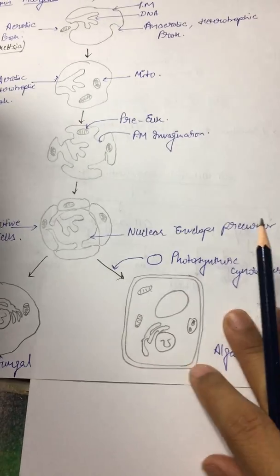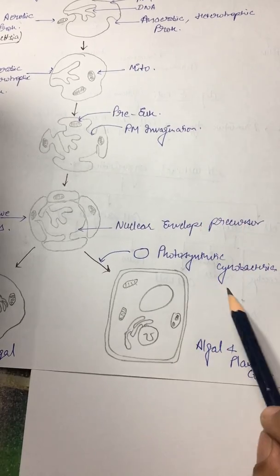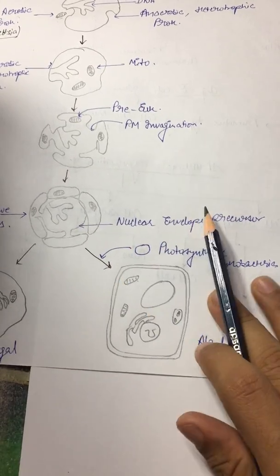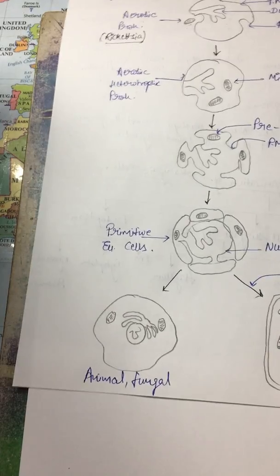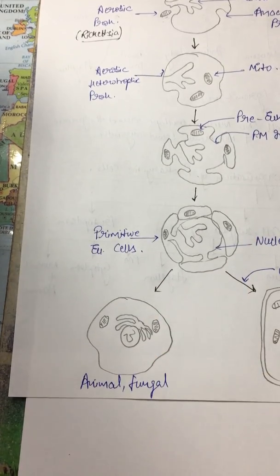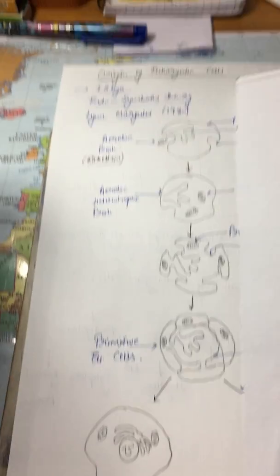And when there is an entry of cyanobacteria inside the cell, it will lead to the formation of plant cell. Otherwise it will form an animal cell. So what are the evidences which will prove this theory is correct?